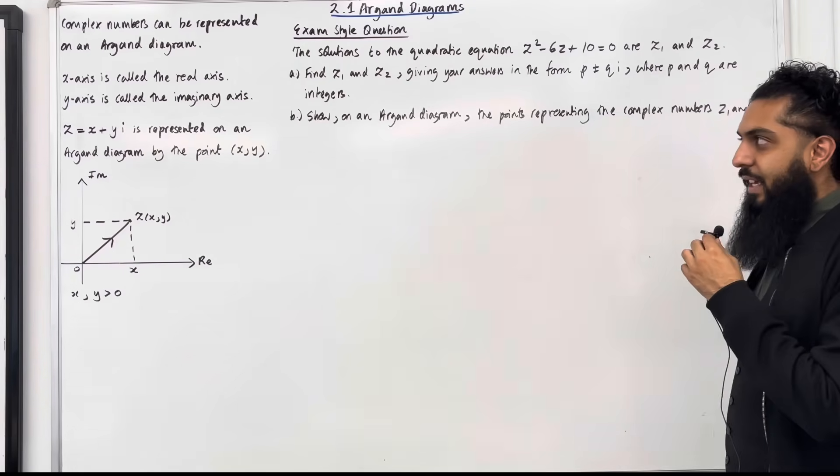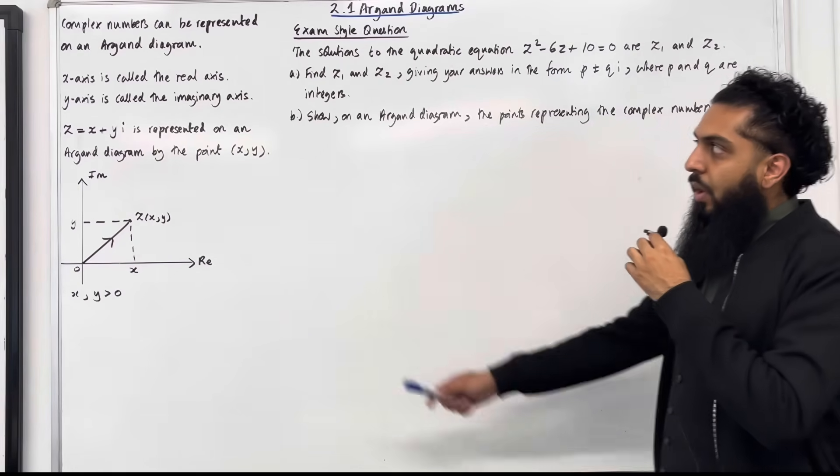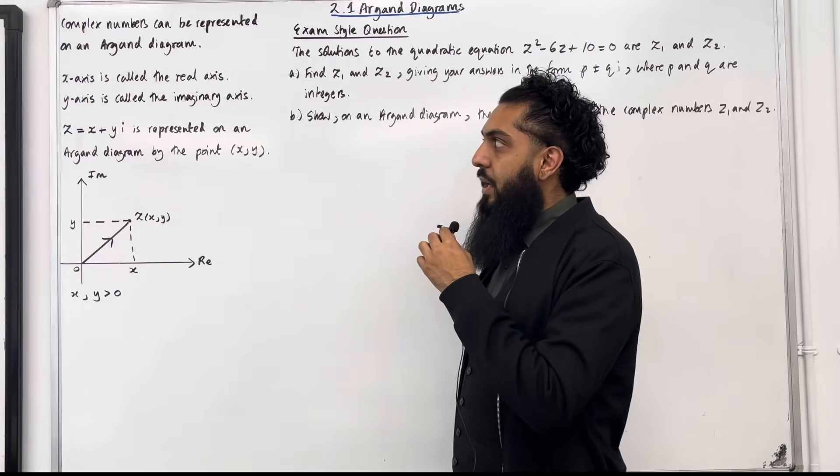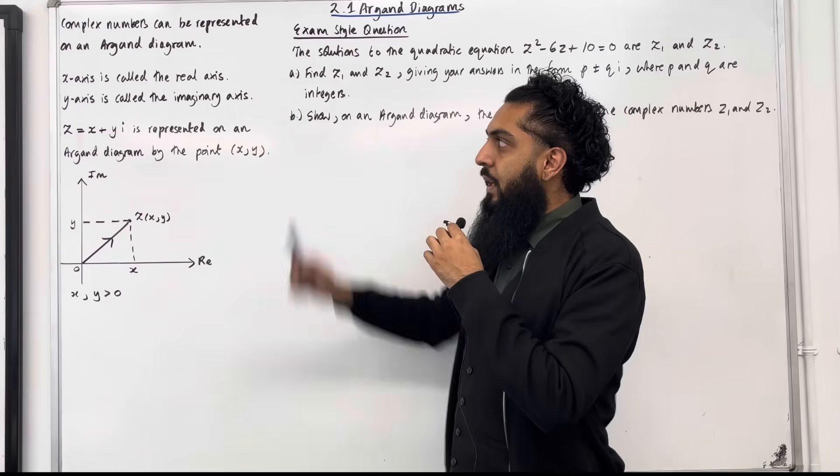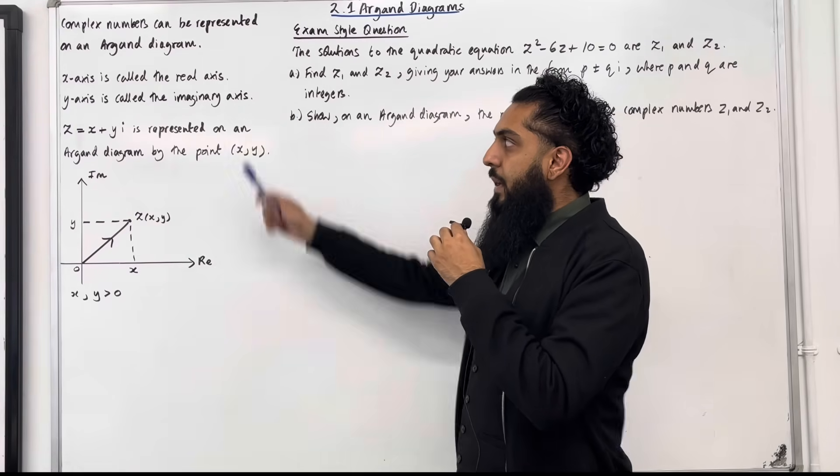Let's have a look at the key facts of this section. Complex numbers can be represented on an Argand diagram. The x-axis is called the real axis. The y-axis is called the imaginary axis.